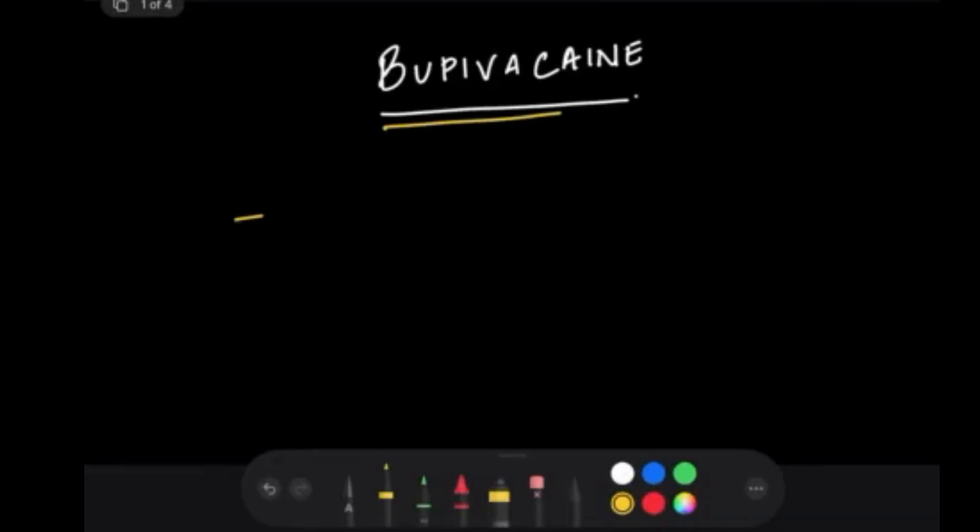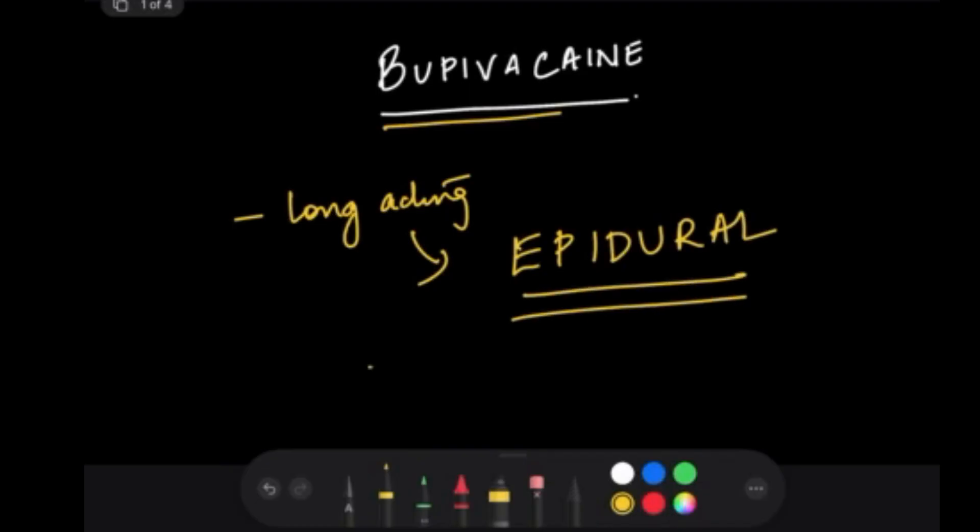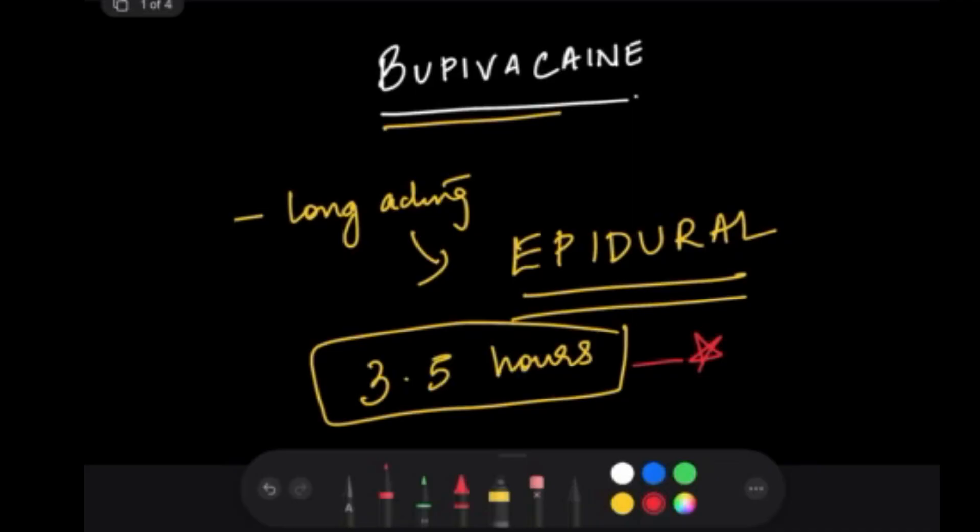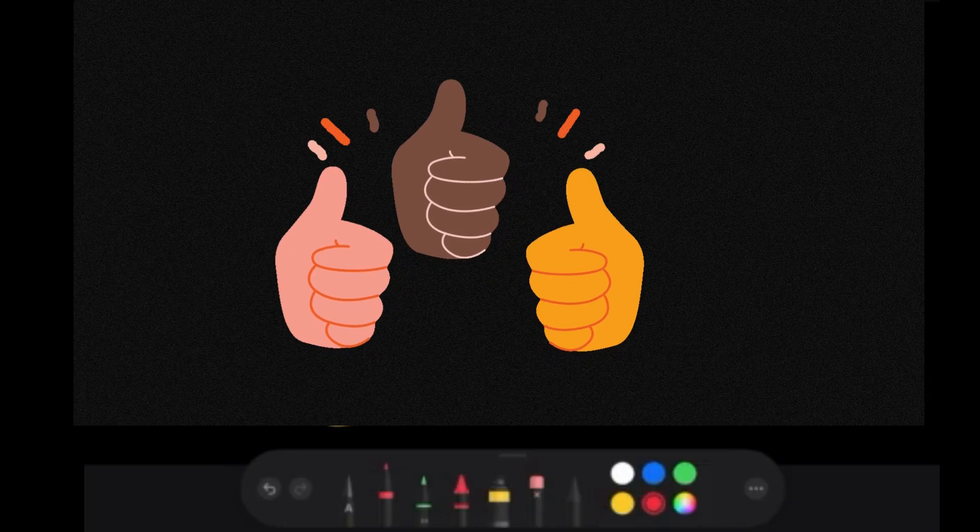Last but not least is bupivacaine. Bupivacaine is long-acting, and because it's long-acting, it's used in epidurals. The anesthetic half-life is 3.5 hours. Now if a question comes with dibucaine in the option, then select dibucaine as the longest acting drug. But if dibucaine is not there and bupivacaine is there, then select bupivacaine. These are just some tricks that you need to know.